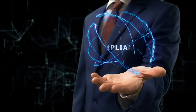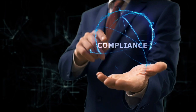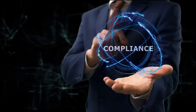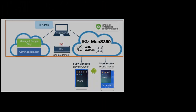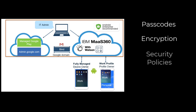Security management is a core function of MDM solutions, focusing on protecting mobile devices and the data they contain. This includes enforcing passcodes, enabling encryption, and setting up security policies. For example, IBM MAS 360 can enforce encryption on all devices, ensuring that data is protected even if the device is lost or stolen. Security management also involves monitoring devices for compliance with security policies and taking action if a device is found to be non-compliant. This feature helps organizations protect sensitive information and reduce the risk of data breaches.